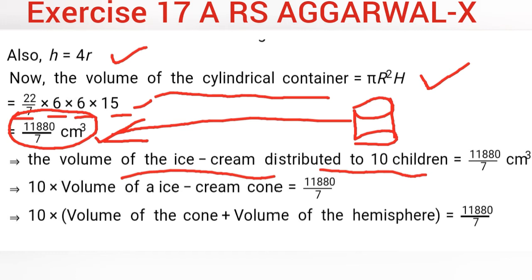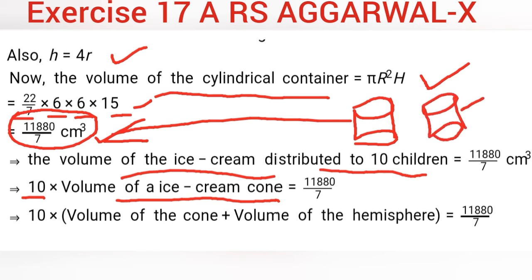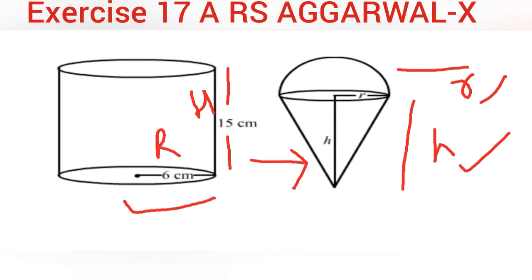The volume of ice cream distributed to 10 children will be 10 times the volume of one ice cream cone. We write this because we have to use all the ice cream from the cylindrical container. So the cylinder's volume equals 10 times the volume of one cone.